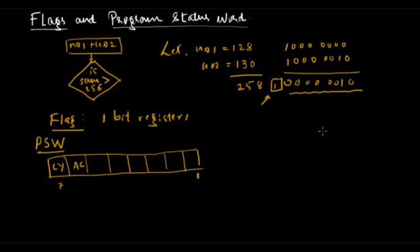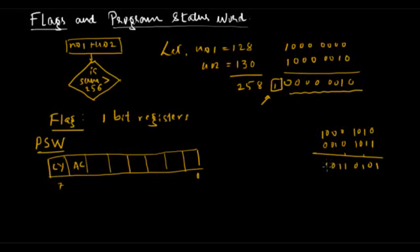To understand the auxiliary carry flag, consider two numbers: 10001010 and 00101011. When we add these two numbers — 1 plus 1 is 0 carry 1, 1 plus 1 plus 1 is 1 carry 1, and so on — we get a carry from the lower nibble to the higher nibble. The auxiliary carry flag is set to 1 when there is a carry from bit 3 to bit 4, that is, from the lower nibble to the higher nibble.